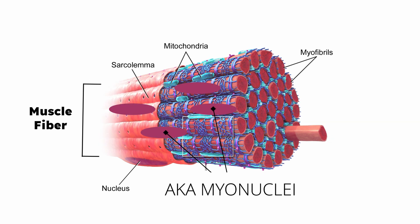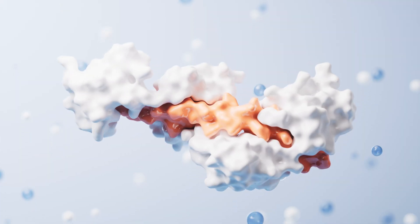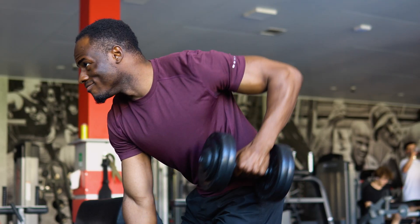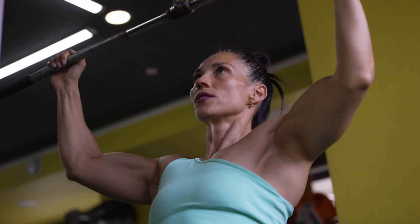The myonuclei are actually considered the brains of a muscle fiber. Myonuclei spit out instructions for how to build proteins. Proteins are so important — they do basically everything. Proteins are like the machinery at a construction site; you could call them molecular machinery. Your myonuclei are actually listening to what you're doing, and they can respond by adjusting the amount of instructions and the type almost in real time and within a few hours of training.